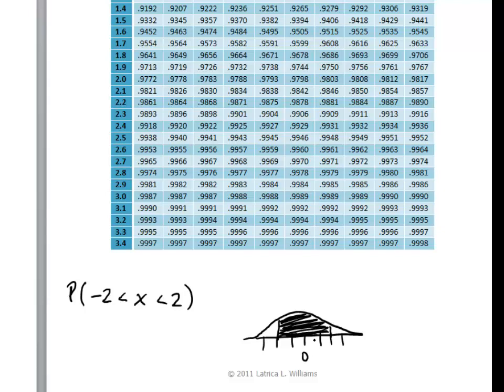Recall that the table only tells you area to the left. It does not tell you area that's between two values. We're going to take a few extra steps to find the probability. First, I'm going to find the area that is to the left of positive 2.